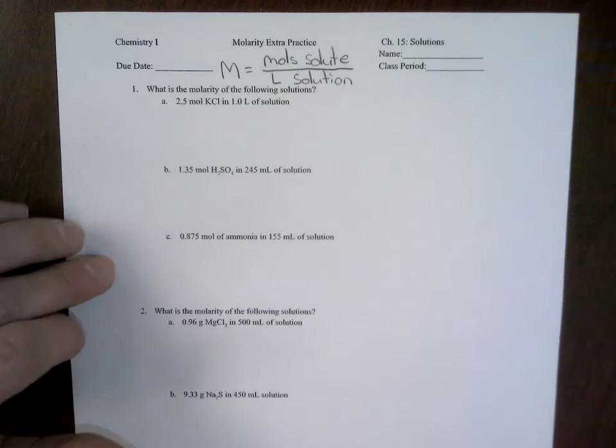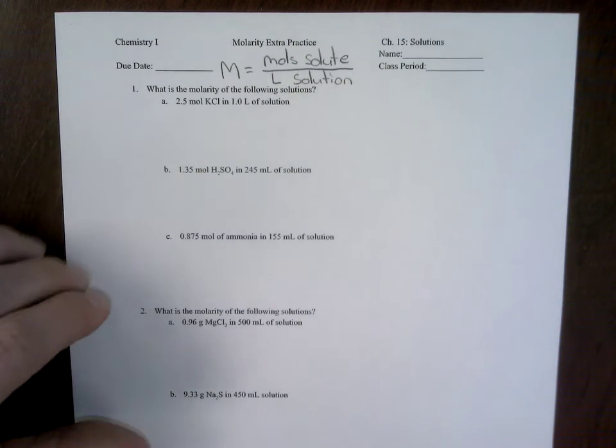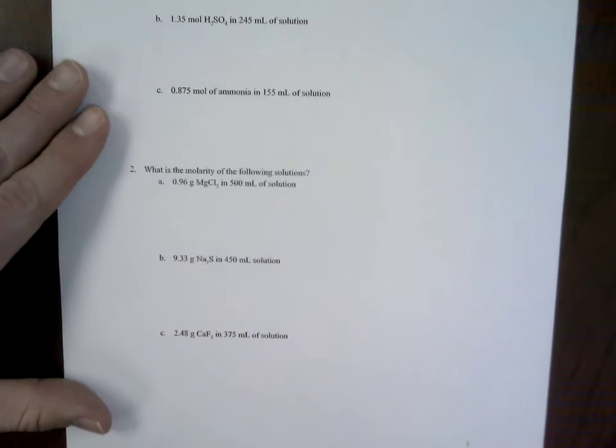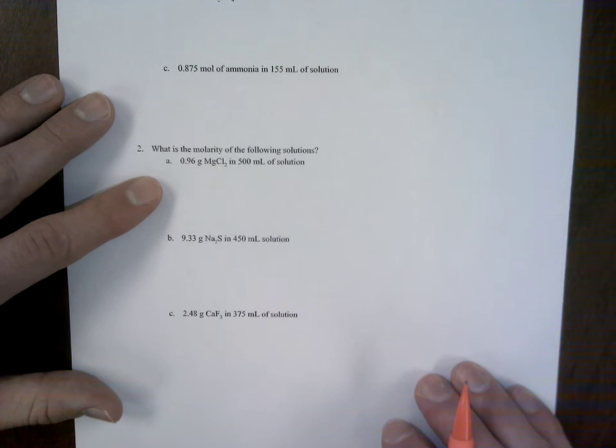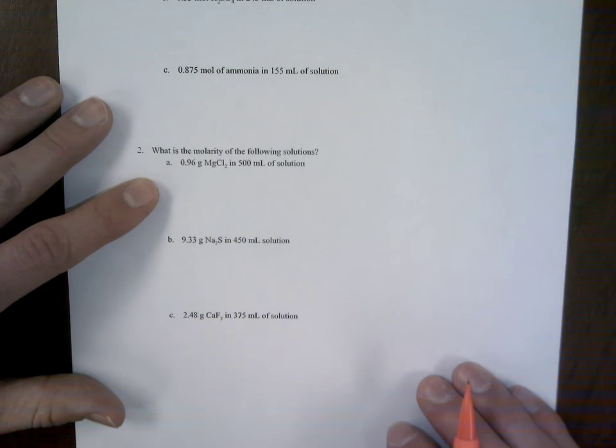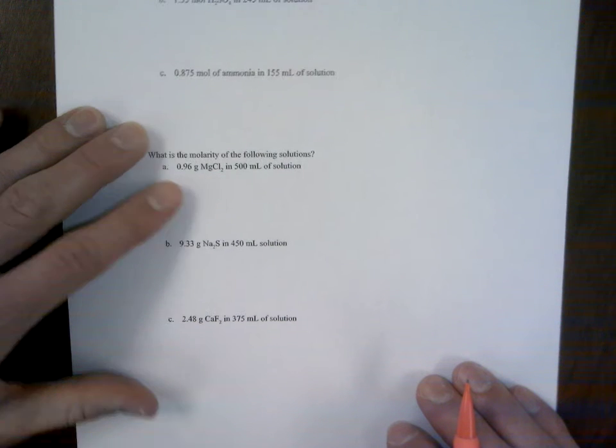1A through 1C is pretty simple, so I'm going to skip over that and jump right to 2A. It says, what is the molarity of the following solutions? We have 0.96 grams of magnesium chloride, or MgCl2, and 500 milliliters of solution.